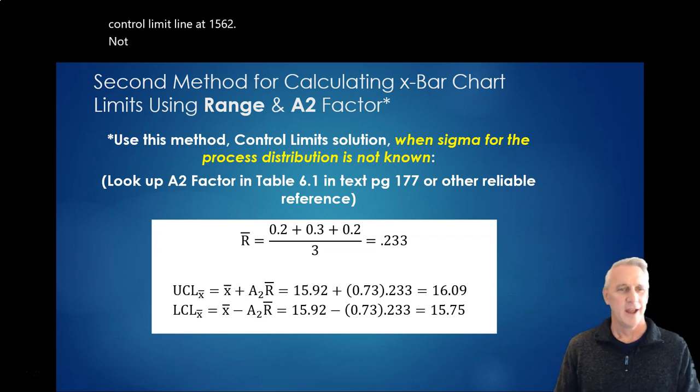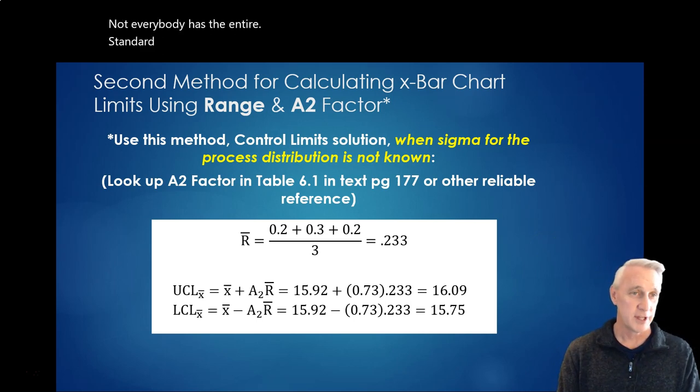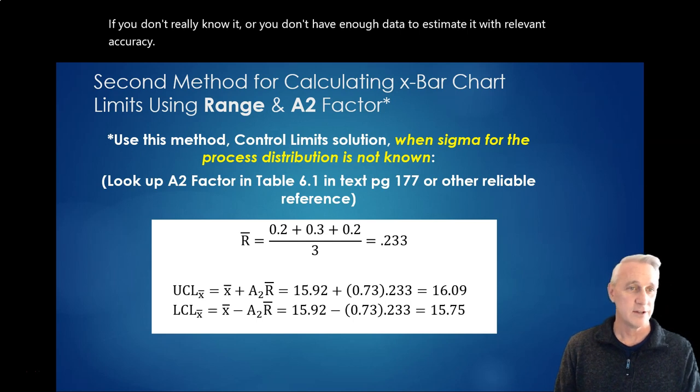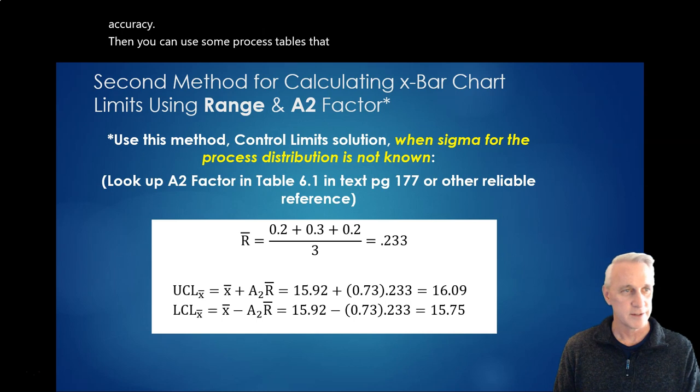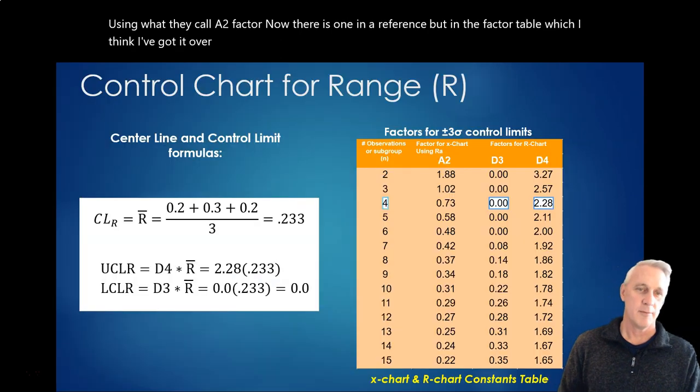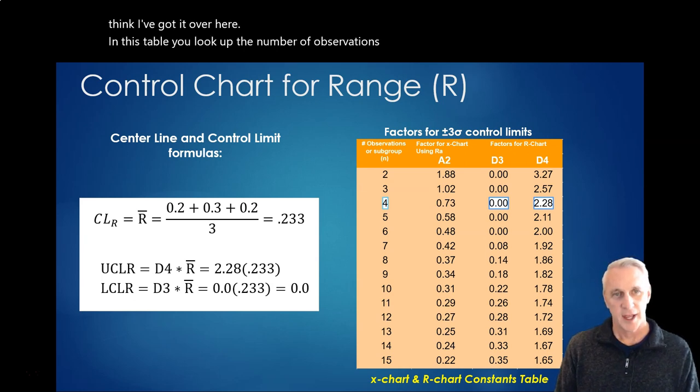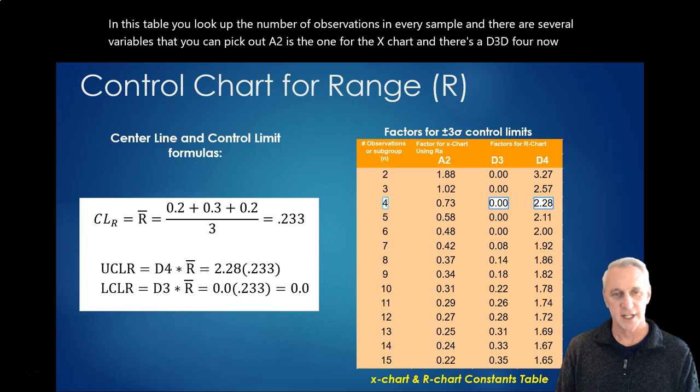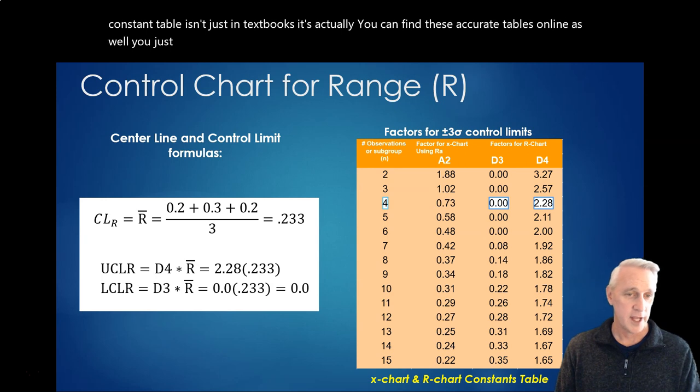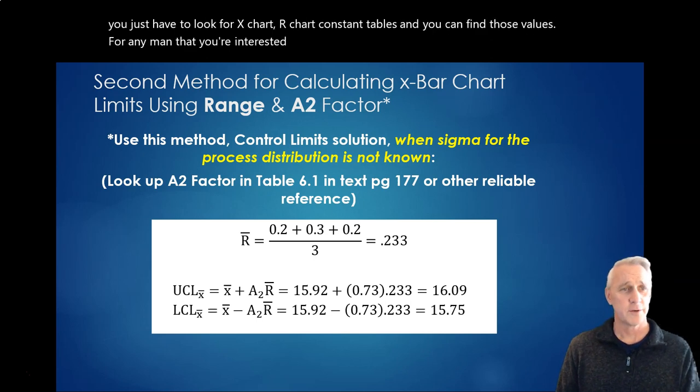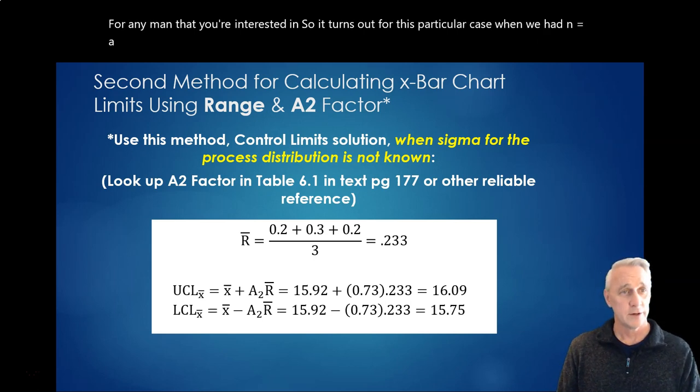Now, not everybody has the entire standard deviation for the population. If you don't really know it, or you don't have enough data to estimate it with relevant accuracy, then you can use some process tables that have been developed over the years using what they call the A2 factor. Now, there is one in a reference, but in the factor table, which I think I've got it over here, in this table, you look up the number of observations in every sample, and there are several variables that you can pick out. The A2 is the one for the X chart, and there's a D3, D4. Now, this constant table isn't just in textbooks. It's actually, you can find these accurate tables online as well. You just have to look for X chart, R chart, constant tables, and you can find those values for any N that you're interested in.